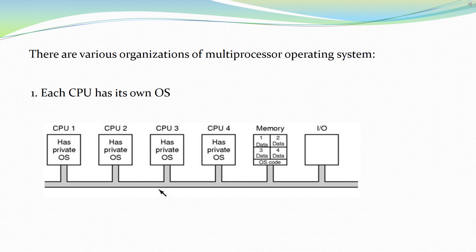There are various organizations of multiprocessor operating systems. The first is where each CPU has its own operating system. In this type of organization, there are multiple CPUs in the system and each CPU has its own private operating system. Memory is shared among all the processors, and all processors and input/output systems are also shared. All systems are connected by a single bus.